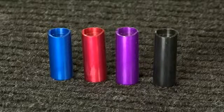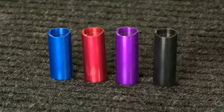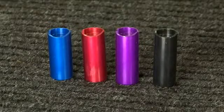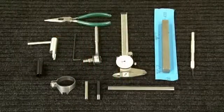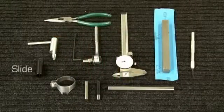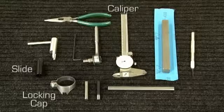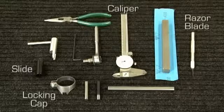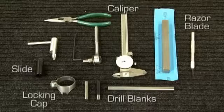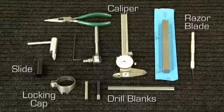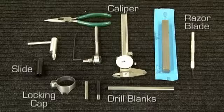Note each slide varies in overall length and is easily identified by color. The key components are as follows: the slide, a locking cap, a caliper, a razor blade, and the proper drill blank for reference. Drill blanks or rods are readily available through any tool or parts distributor, such as McMaster-Carr, etc.